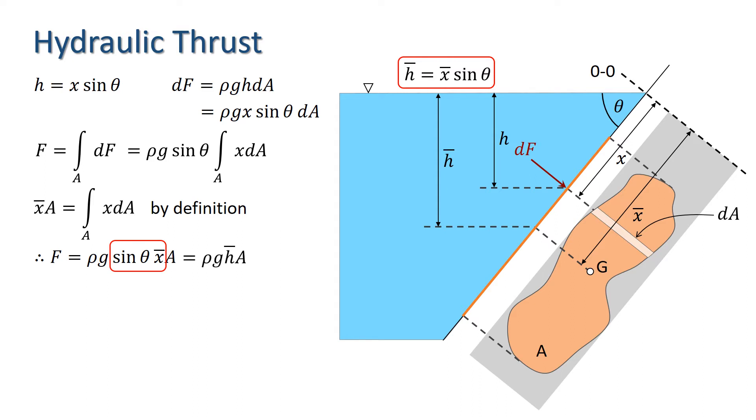Finally, we note that rho G H bar is the pressure at the point G, thus F simplifies to pressure at the centre of gravity times area.